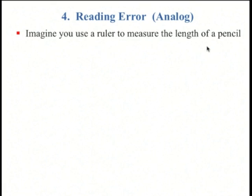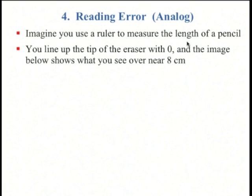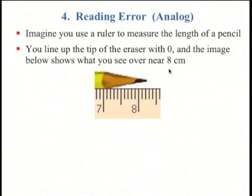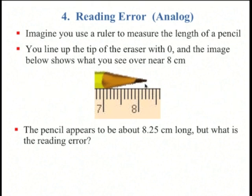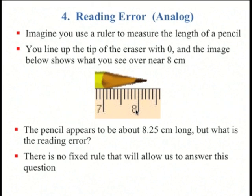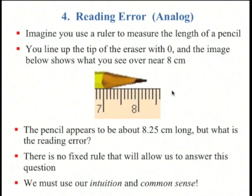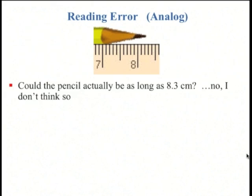Imagine you use a ruler to measure the length of a pencil, and you line up the tip of the eraser with zero on the ruler. Here's the tip of the pencil, which is somewhere near about 8 cm. This pencil looks to be about 8.25 cm long. But what's the error in that measurement? It turns out that for analog instruments, there's no fixed rule that will allow us to answer this question. You have to use your intuition and your common sense.